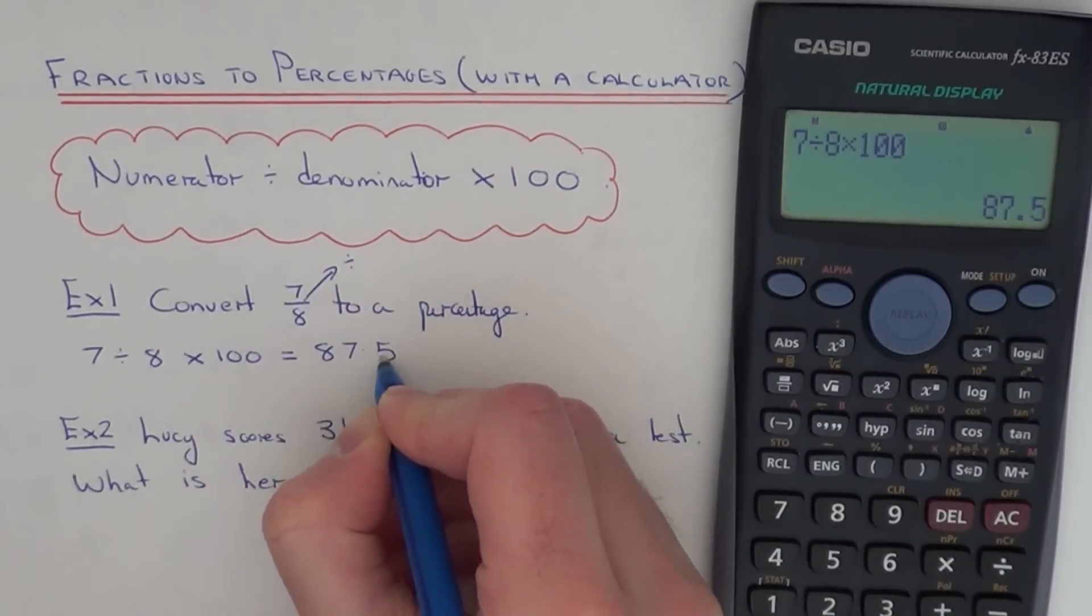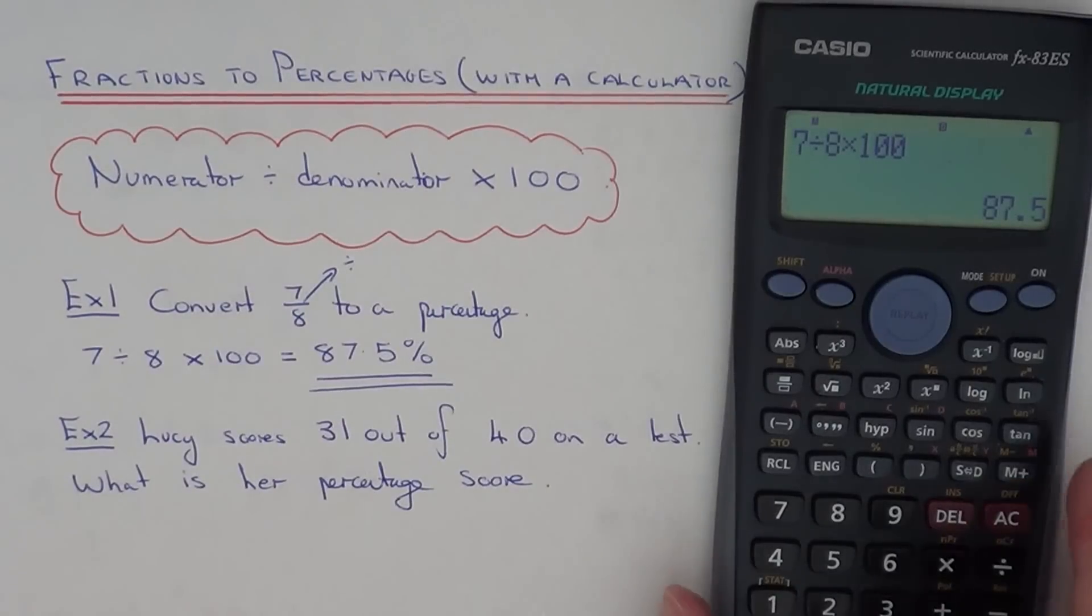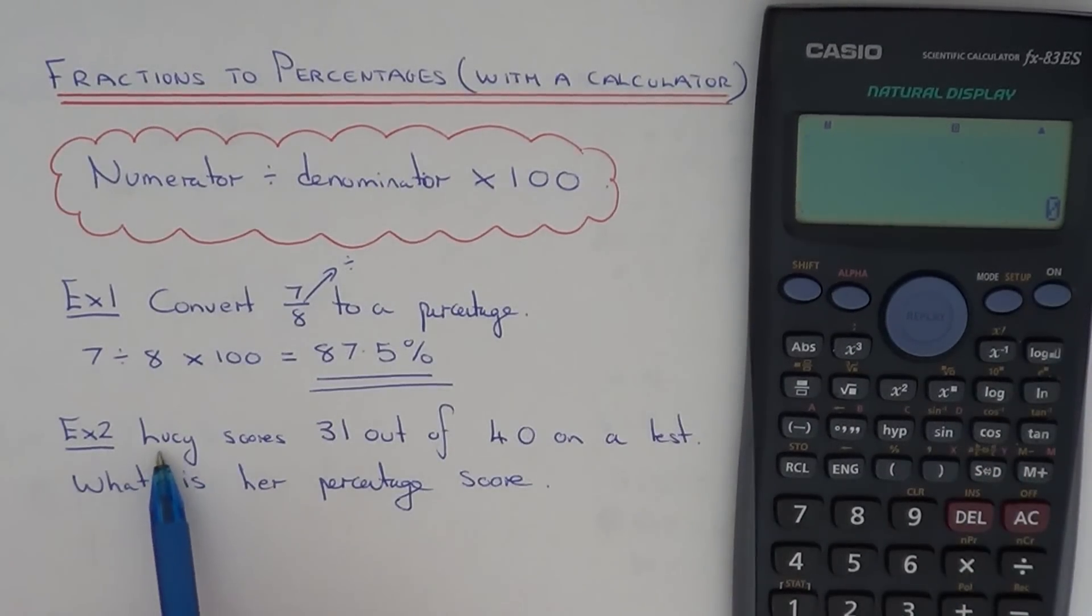So let's move on to example 2. This time Lucy scores 31 out of 40 on a test. What is her percentage score?